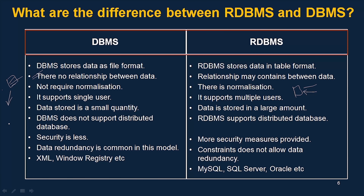Data redundancy is common in DBMS. For example, if one user stores data in a file and another user inserts the same data without checking previous files, duplicate records will be inserted. In RDBMS, constraints do not allow data redundancy — different types of constraints prevent duplicate data from being inserted into the table.